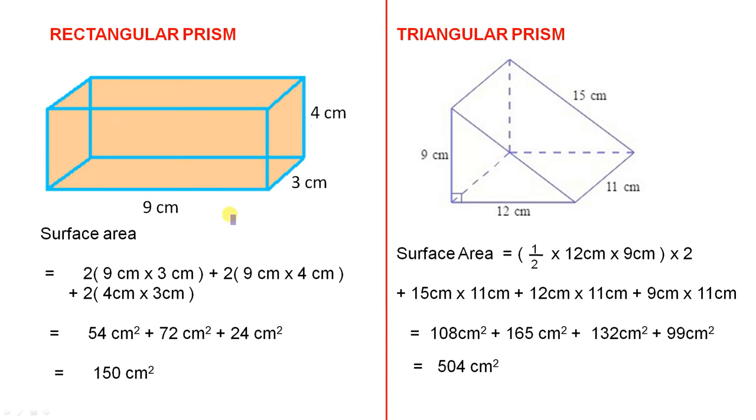For the rectangular prism, we have a prism 9 centimetres, 3 centimetres, and 4 centimetres. The surface area is 2 times 9 times 3, because 9 times 3 is the base, but you've also got the top, so that's why you've got 2.